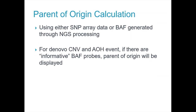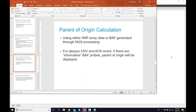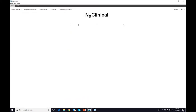Related to this, we've added something that's been requested by our SNP array users for some time. If you have a SNP array or are generating SNP data using NGS — where you can calculate B-allele frequency using our MSR algorithm — we can now detect and report de novo CNV and AOH events and identify which parent the allele came from: if it's a deletion, which parent's allele was deleted, or if it's a UPD, which parent got duplicated. Let me show you an example of that from a customer in Europe.